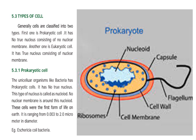Another one is the eukaryotic cell. It has a true nucleus consisting of a nuclear membrane. Prokaryotic cells are unicellular organisms — unicellular, as you know.